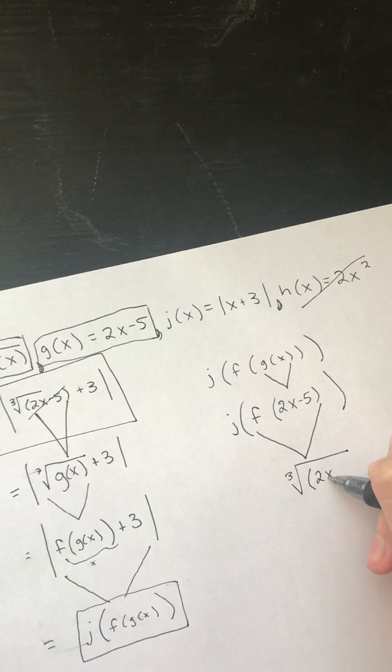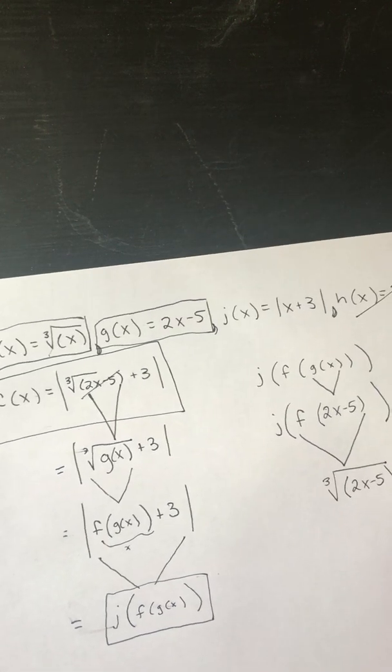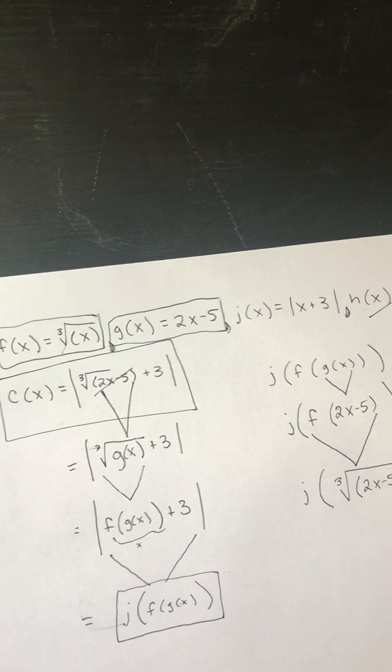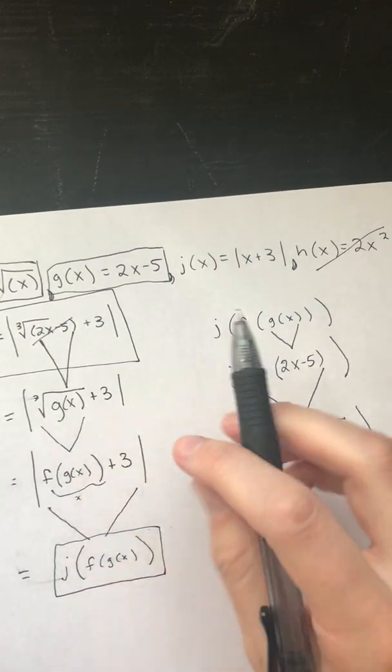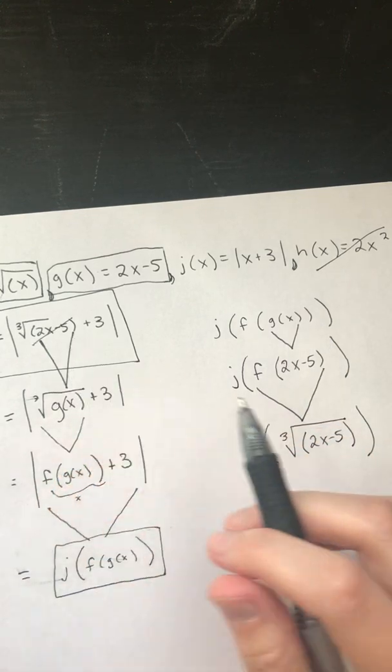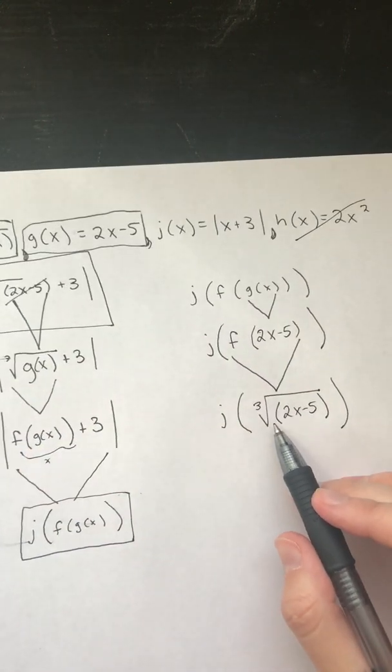So it's 2x minus 5 inside of there and then we're taking j of all that and see how we're just kind of like doing the exact opposite. We're expanding versus making it smaller. So here we go. Last thing.